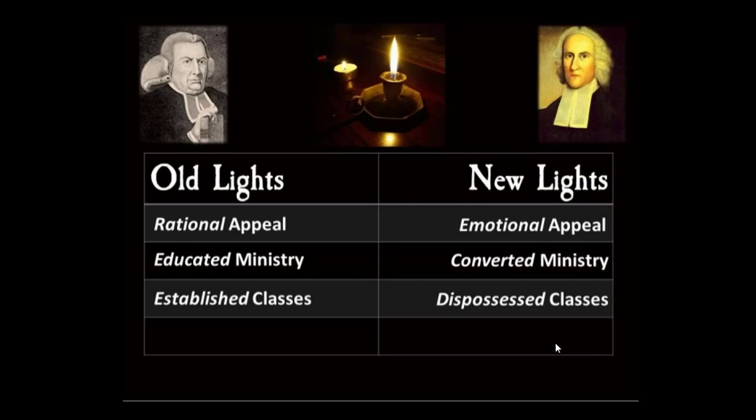The Old Lights were conservative ministers opposed to the passion displayed by these new evangelical preachers, preferring to emphasize the importance of cultivating a virtuous Christian life. Old Lights had a rational appeal, an educated ministry, and mostly catered to the established and privileged classes. The New Lights were evangelical preachers emphasizing spiritual rebirth — they had emotional appeal, a converted ministry where you could become one without years of training, and they mostly appealed to the dispossessed and lower working classes.